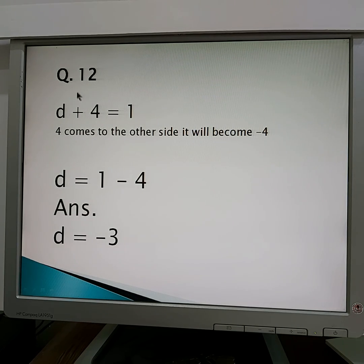Now question number 12, one more question. Here the variable is d, not x. It is not necessary always will be x. Here can be a, b, c, d, whatever. 4 and 1 are the constants and d is the variable, which means we need to find the value of d. When you bring this 4 to the other side it will be minus. Now d equals 1 minus 4.